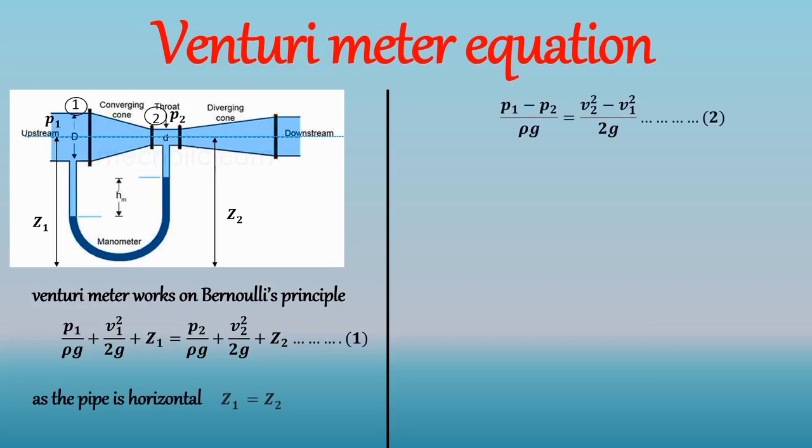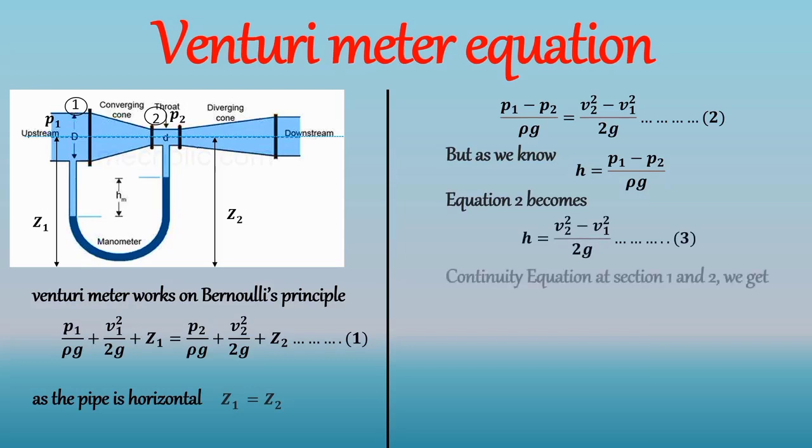But as we know, H, that is the difference of pressure heads at sections 1 and 2 can be written as, hence equation 2 becomes. Now from the continuity equation at sections 1 and 2, we get A1 V1 is equal to A2 V2. So from this we can calculate V1 as. So after putting value of V1 in equation 3 we get.